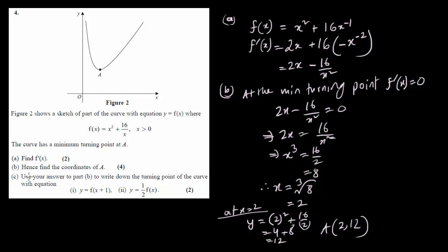Question (c) deals with transformations. The transformation f(x + 1) means the entire picture shifts one unit to the left. If the original turning point is (2, 12), the entire picture moves one unit left, so the new turning point for part (c1) is (1, 12).